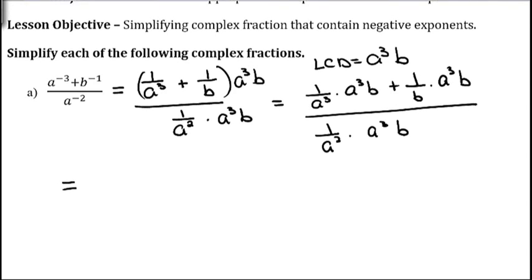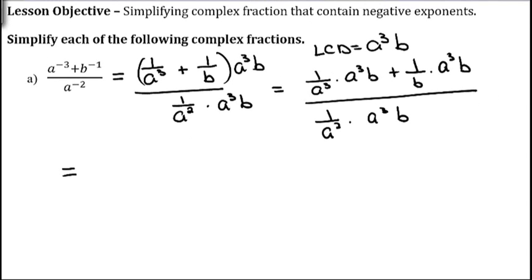When I multiply 1 over a cubed by a cubed b, the a cubes cancel and we're left with b. Plus, when we multiply 1 over b by a cubed b, the b's cancel so we're left with a cubed. And when we multiply 1 over a squared by a cubed b, two of these a's cancel but we're left with one, so we have a b.